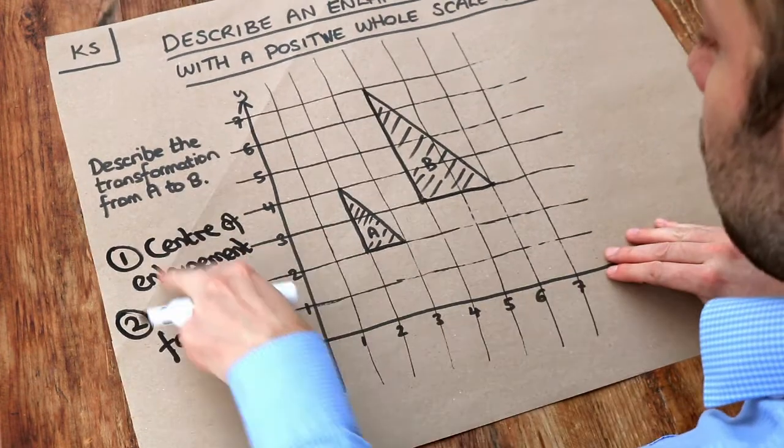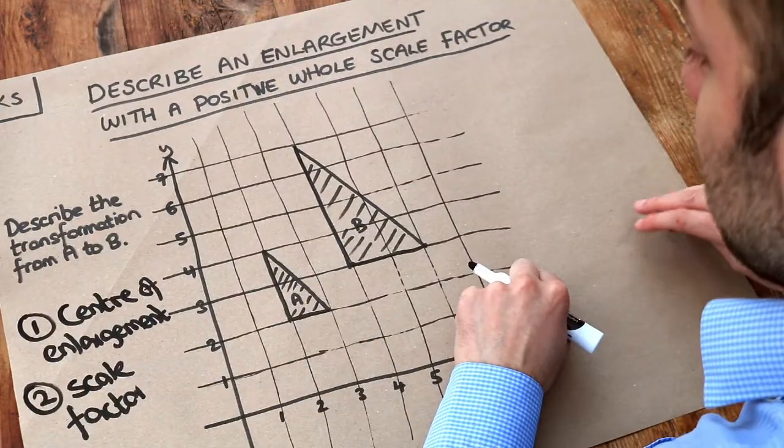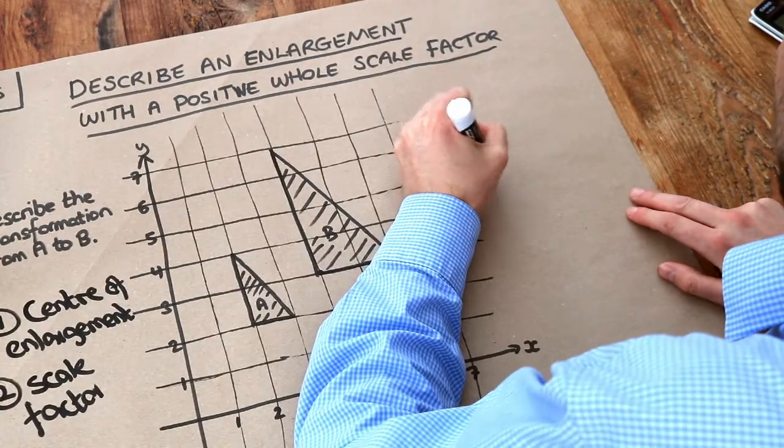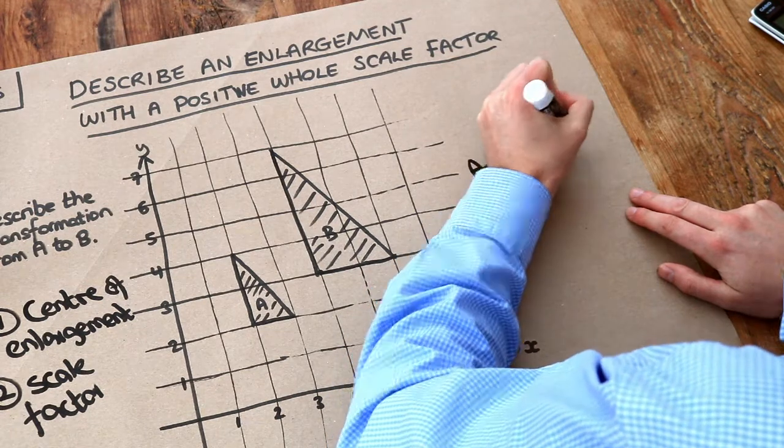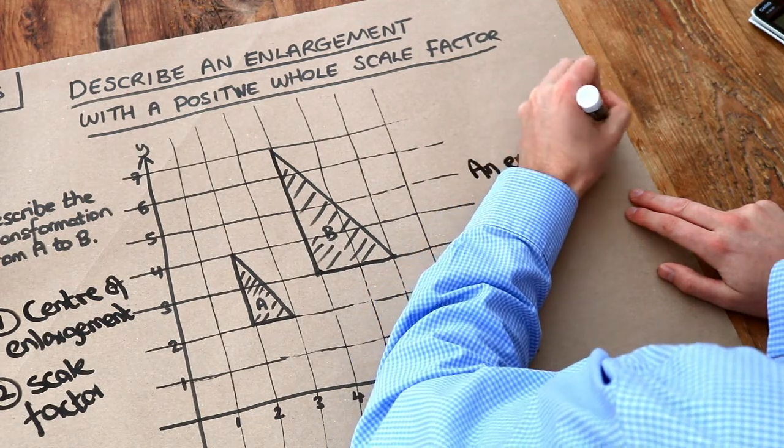So let's use these two things to describe this transformation. Now you first need to say it's an enlargement. And there's a mark by just saying it's an enlargement rather than something wrong like a rotation or a translation.